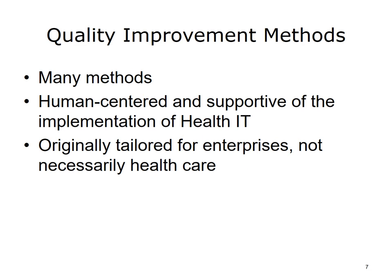There are many methods for quality improvement. In this unit, we focus on process improvement that is human-centered and supportive of the implementation of health IT. Ransom et al., in their textbook of healthcare quality improvement, present several strategies and associated tools, including API, Baldrige, Focus PDCA, PDSA Cycle, ISO 9000, Kaizen, Lean Thinking, and Six Sigma. Quality improvement methods were originally tailored for enterprises, not necessarily healthcare. For example, Six Sigma was designed for manufacturing but has spread to service enterprises, including healthcare.